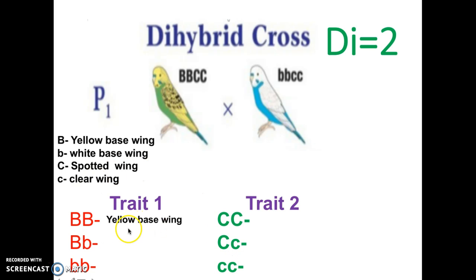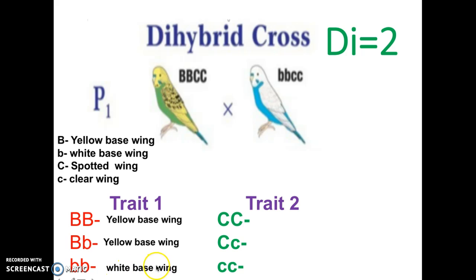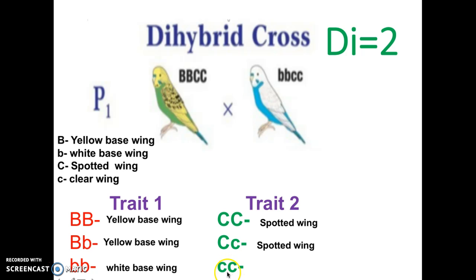If it is big B, big B, you understand this is going to be yellow base. If it is big B, little b — heterozygous — that is also yellow base since the dominant allele is present. And little b, little b is the only way the bird will have white wings, because you need the two recessive alleles. If it is homozygous dominant big C, big C, it is going to be spotted. Heterozygous will also be spotted. And a bird that is little c, little c will be clear wings — no spots on them. Please keep those things in mind, as that's going to be important for the end product.